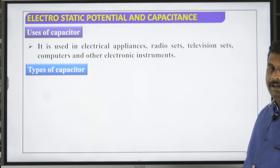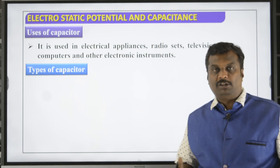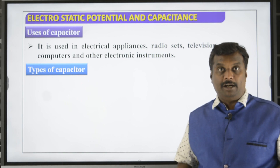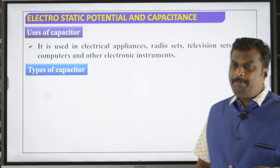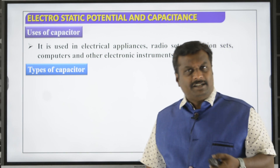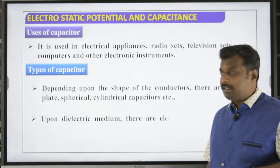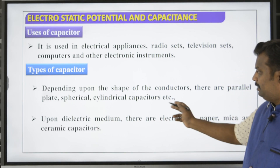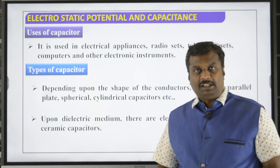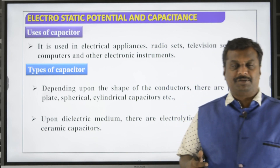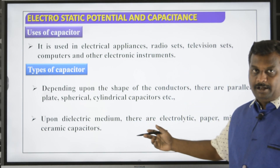Types of capacitors: we basically classify them depending upon their shape. There are cylindrical capacitors and spherical capacitors. For a spherical capacitor, the capacitance is C equals 4πεr. There are also parallel plate capacitors. Based on dielectric material, there are paper plate capacitors, mica capacitors, and ceramic capacitors.